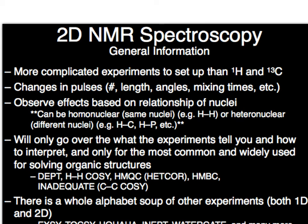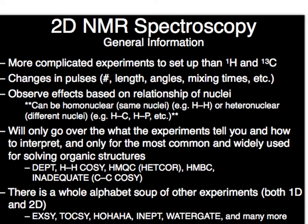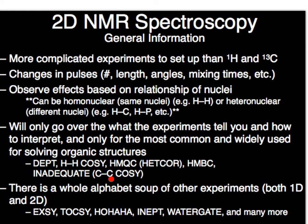You're observing effects on basically the relationship of nuclei. So you're observing how proton and proton interact with each other, proton and carbon, or even different nuclei, proton and phosphorus, all those types of things. So you're observing how they're interacting with each other in these spectrums. So we're going to go over kind of, this could be an alphabet soup. If you look at these things, it's just like DEPT, COSY, HMQC, HETCOR, HMBC, literally one's called inadequate, which I would just always laugh about.